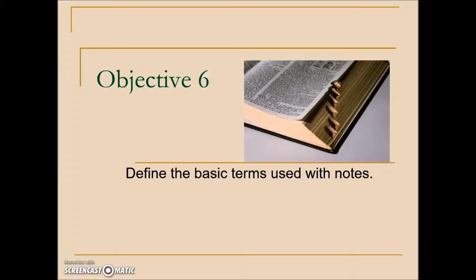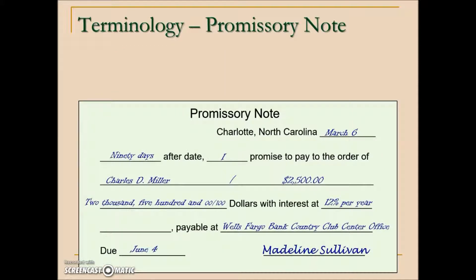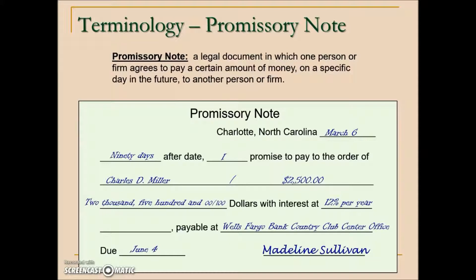Business math, section 9.1, objective 6: define basic terms used with notes. Here we have what's known as a promissory note. It can be written in many forms, but general information is specifically there. It's a legally binding document in which one person or firm agrees to pay a certain amount of money on a specific day in the future to another person or firm. It contains the terms of the loan.